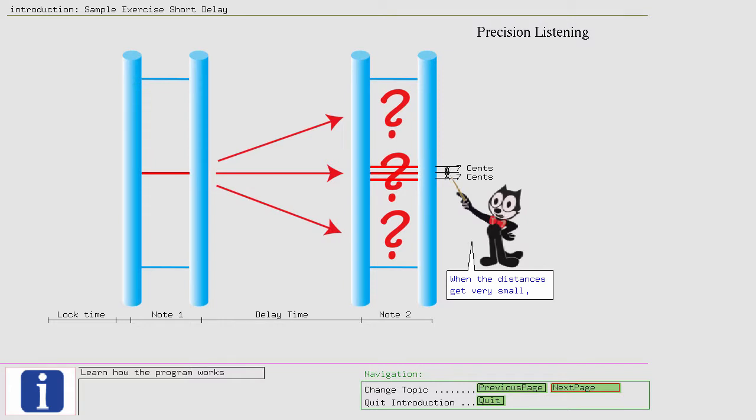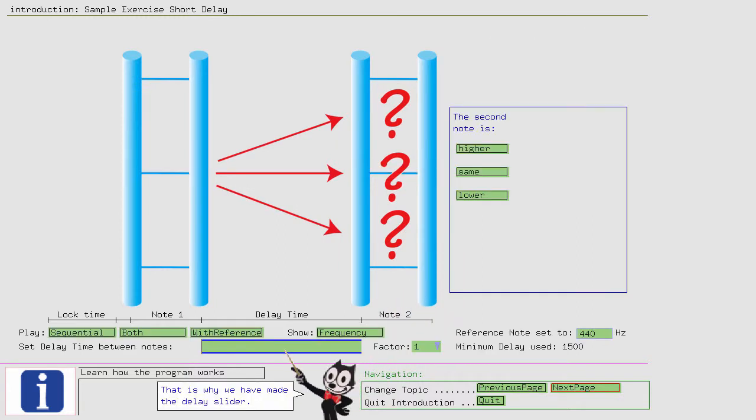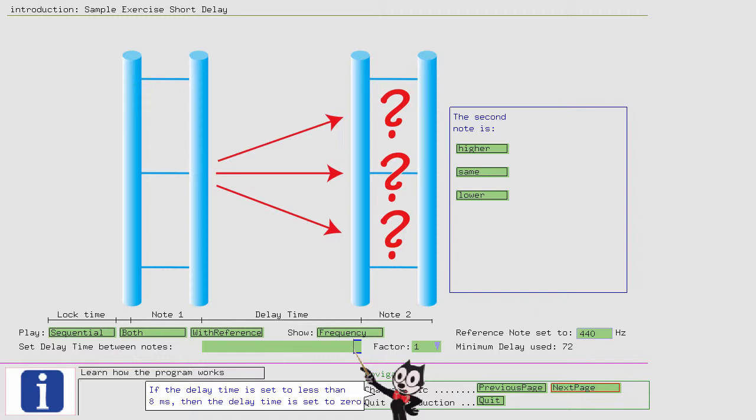When the distances get very small, you might have difficulties in distinguishing them. That is why we have made the delay slider. By decreasing the delay time between the sounds, it becomes easier to detect pitch deviations. If the delay time is set to less than 8 milliseconds, then the delay time is set to zero. In this exercise, the delay is now set to 72 milliseconds, so the delay period will only flash once. Still, you must listen carefully for the pitch change.